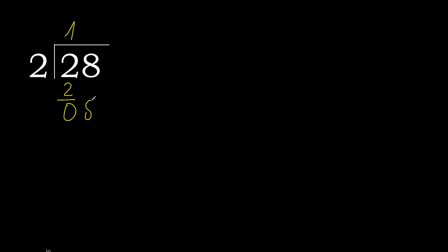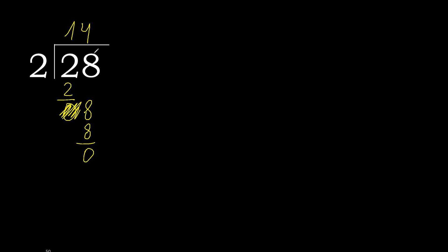Next, bring down the 0 on this side — that gives 8. 2 multiplied by 4 is 8. 8 minus 8 equals 0. And here there is no remainder, therefore we are finished.